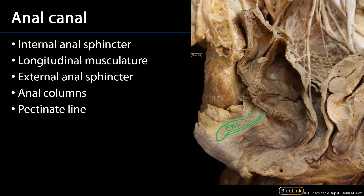The external anal sphincter is innervated by the inferior rectal nerves, which are branches of the pudendal nerve — somatic in origin. We can contrast that with the internal anal sphincter, which we can see right there. Both the internal anal sphincter and the longitudinal muscle are of the enteric nervous system and are extrinsically innervated by the inferior hypogastric plexus — so they are autonomically innervated.